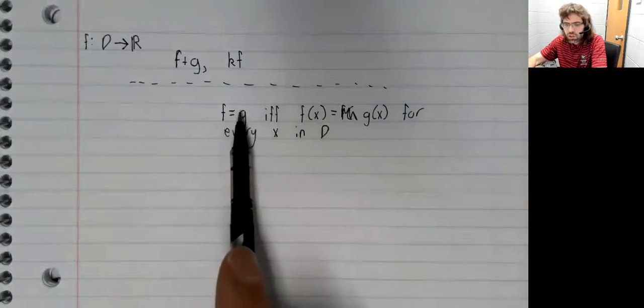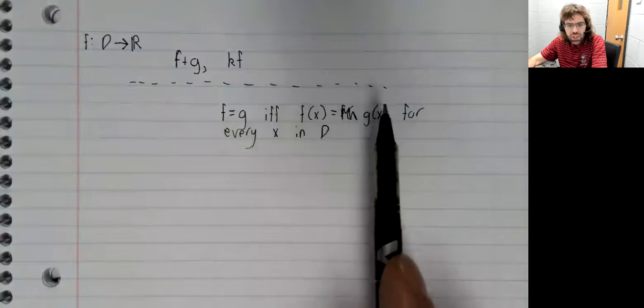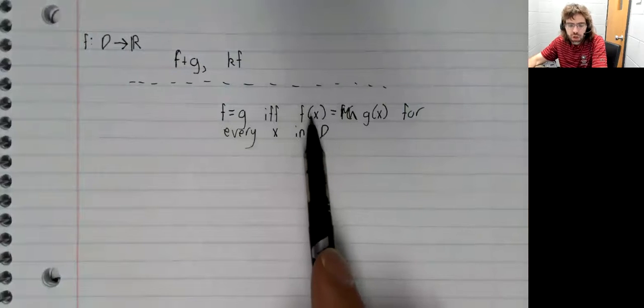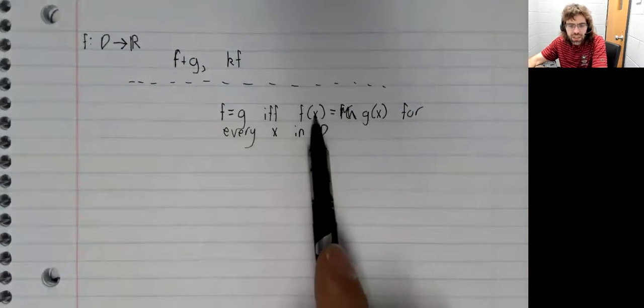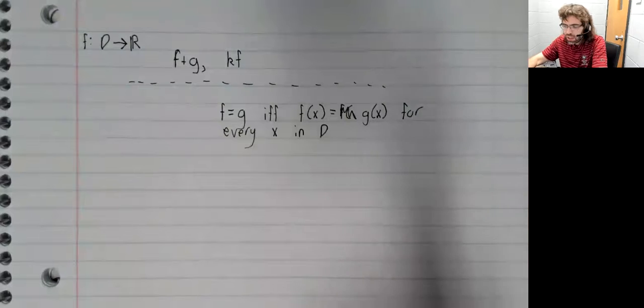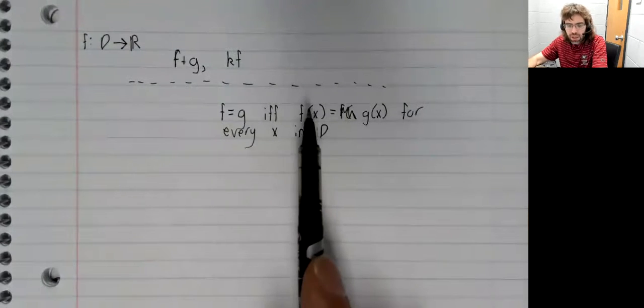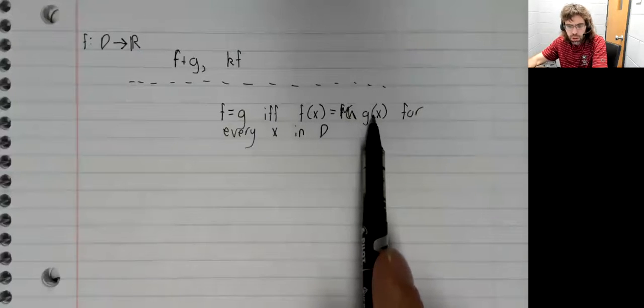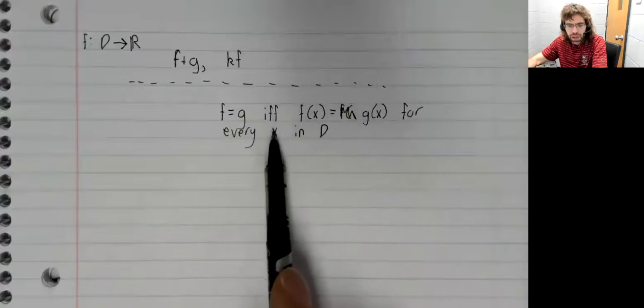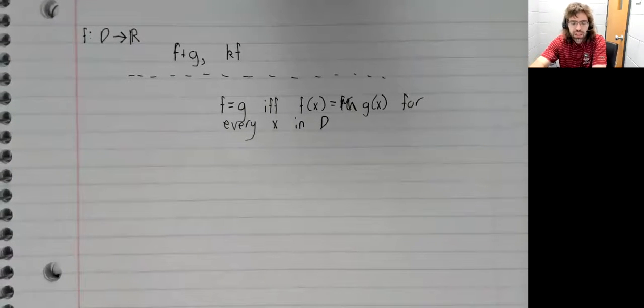So here, f and g are functions, f of x and g of x are real numbers. These are the outputs we get from the input x. So two functions are equal if this real number equals this real number for every input x.